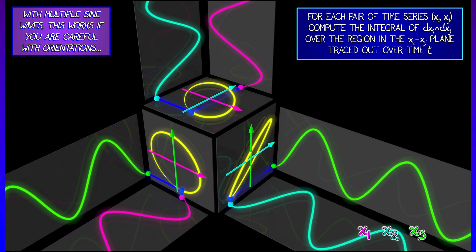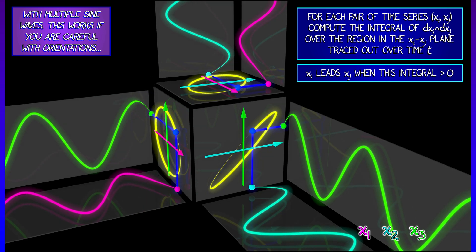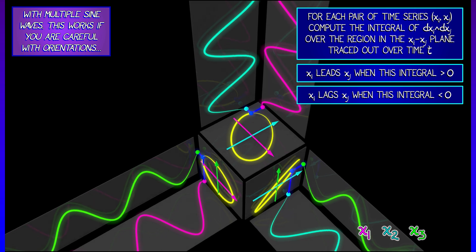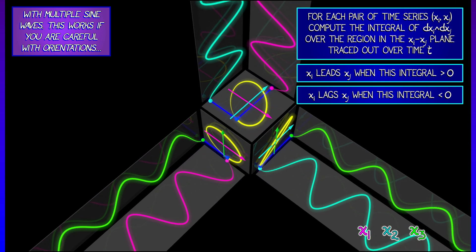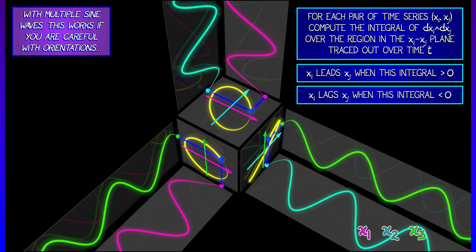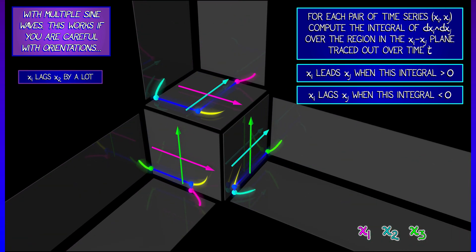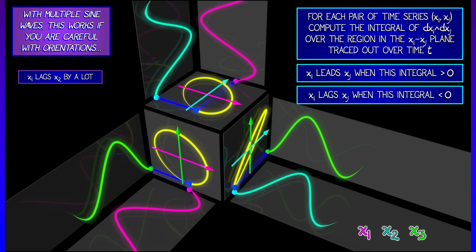Xi is going to lead xj when that integral is positive, and xi is going to lag behind xj when that integral is negative. And you have to compute these for all combinations, all pairs, i and j.